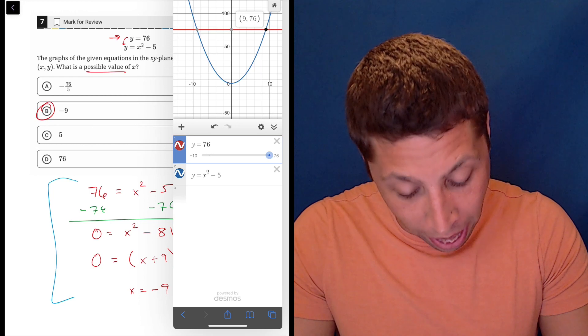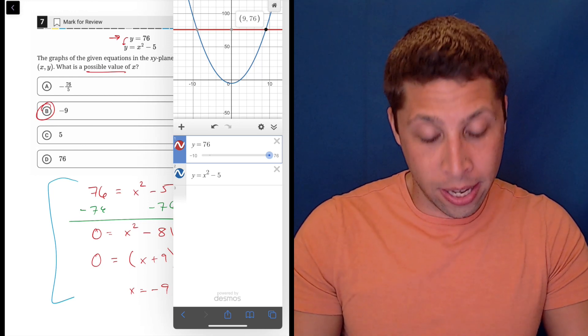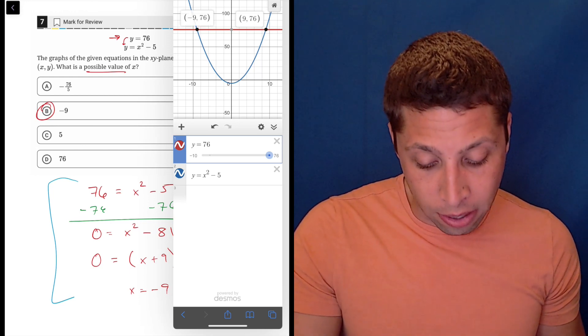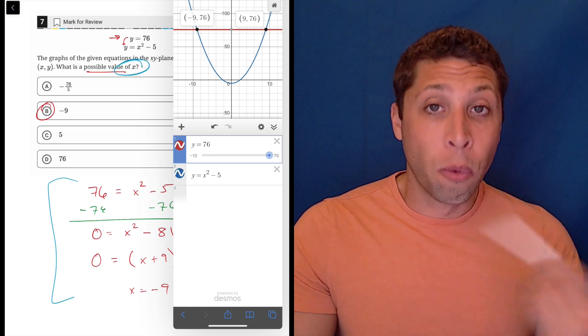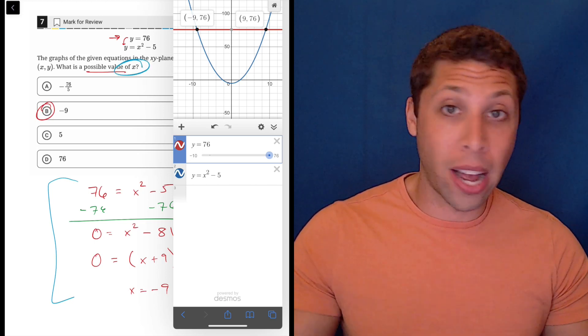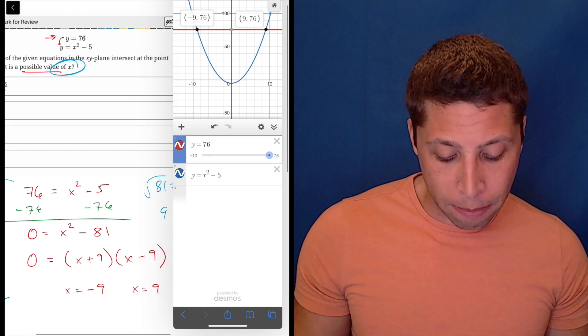So we can just kind of zoom. I'm going to keep pinching and there's the red and we can tap these intersection points. Yeah, it's going to let me do that. So the two intersections are 9, 76 and then negative 9, 76. And since they're asking for the value of X, we're going to use the negative 9 and the positive 9 just like I solved for in my equation.